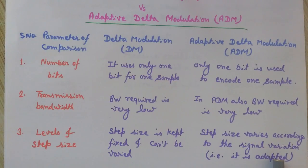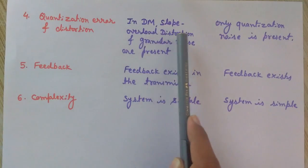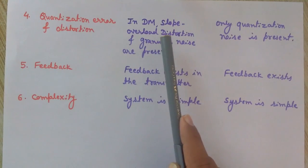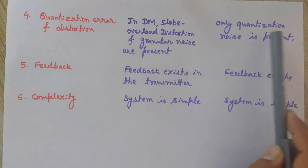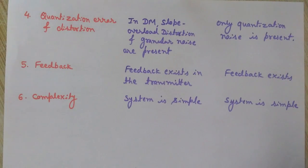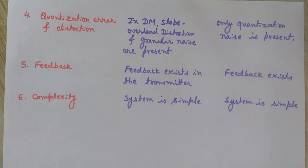The fourth point is quantization error and distortion. In Delta modulation we have slope overload distortion and granular noise. In adaptive Delta modulation, only quantization noise is present, which arises due to the approximation process in quantization. Slope overload distortion occurs when there are large dynamic variations in the signal compared to the step size, while granular noise occurs when signal variations are very small compared to the constant step size.